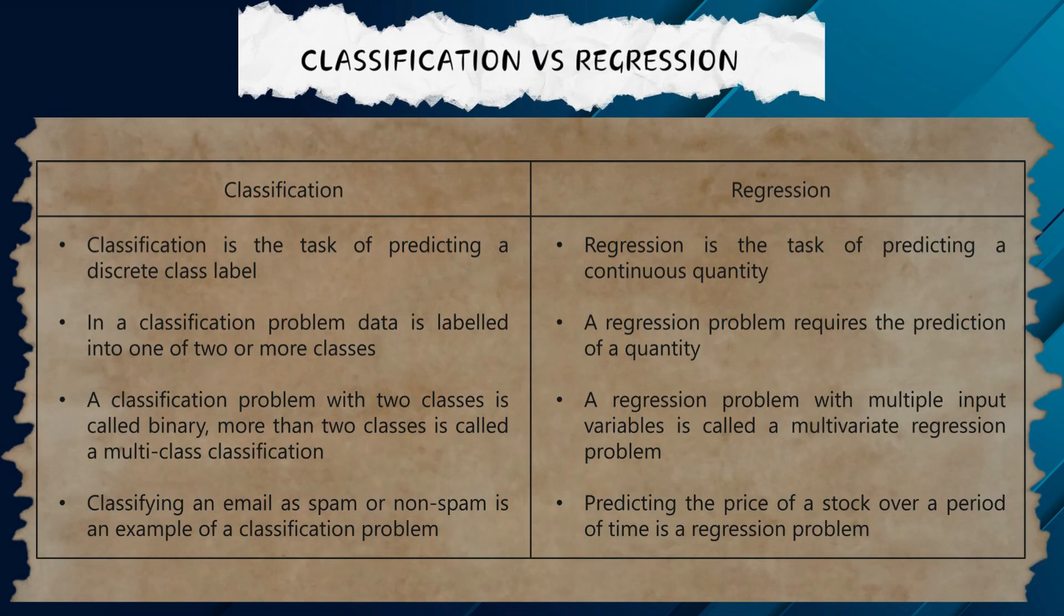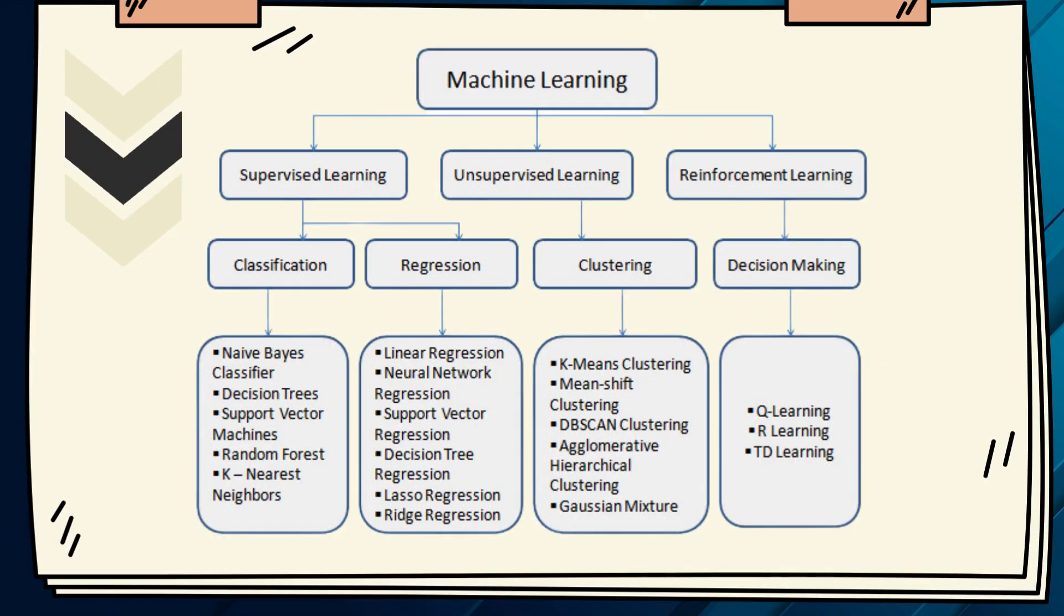Let's do a quick comparison between classification and regression. The most significant difference between regression versus classification is that while regression helps predict a continuous quantity, classification predicts discrete class labels.